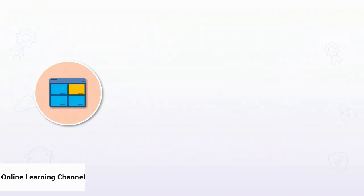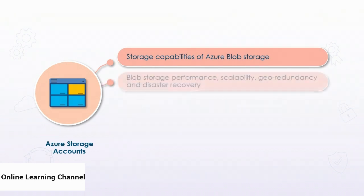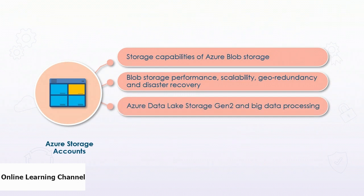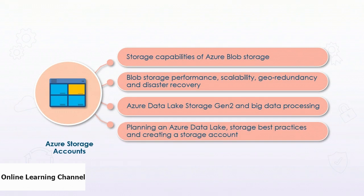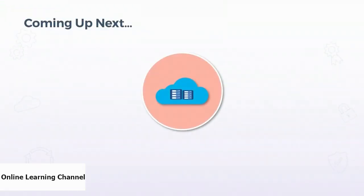In this course, we've examined how to plan for an effective deployment for data and big data storage. We did this by exploring data storage capabilities of Azure Blob Storage, Blob Storage Performance, Scalability, Geo Redundancy, and Disaster Recovery. We looked at Azure Data Lake Storage Gen 2 and big data processing, and looked at planning an Azure Data Lake, storage best practices, and creating a storage account. In the next course, we'll move on to examine how to plan a data structure for efficient storage and transactions.